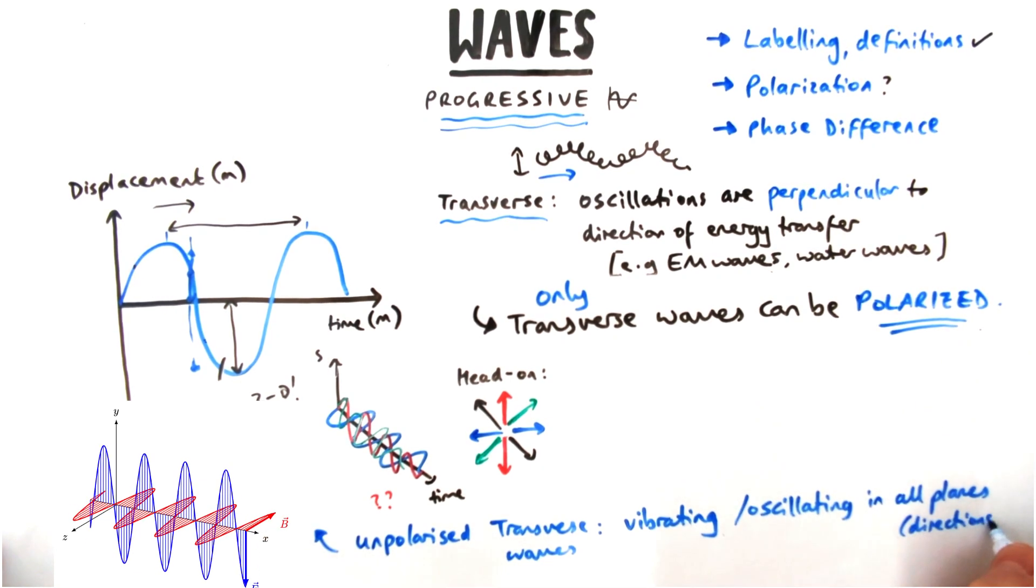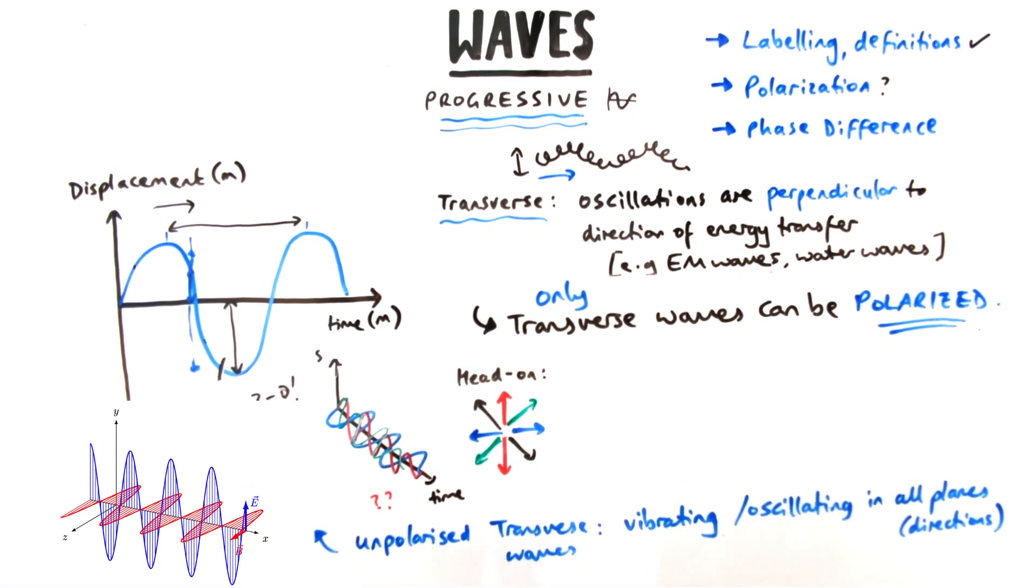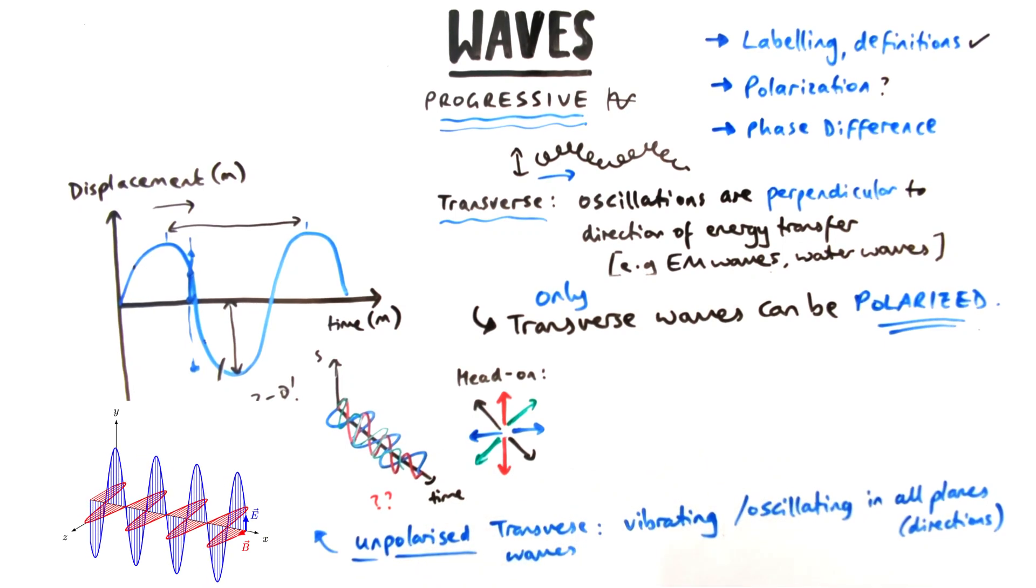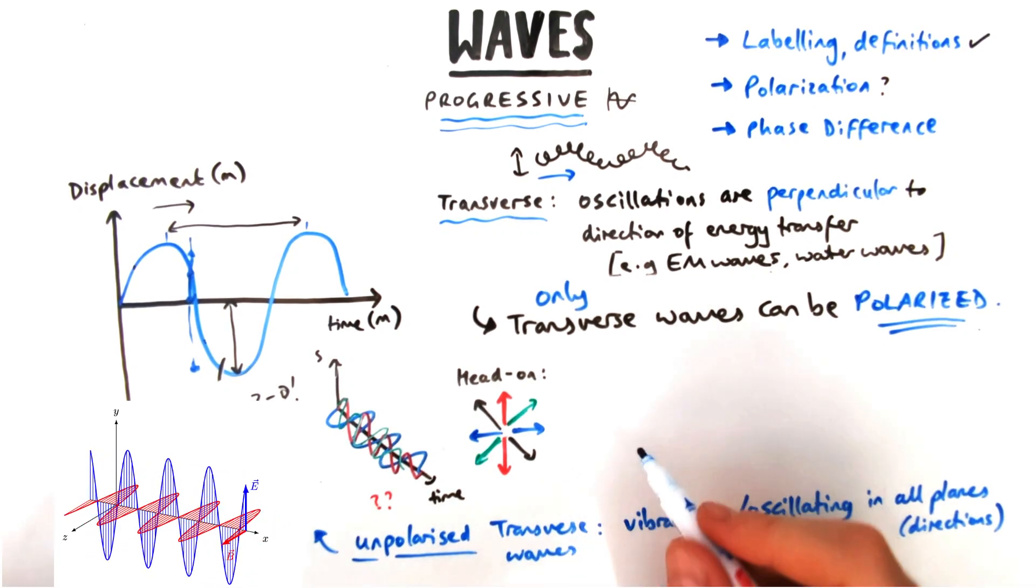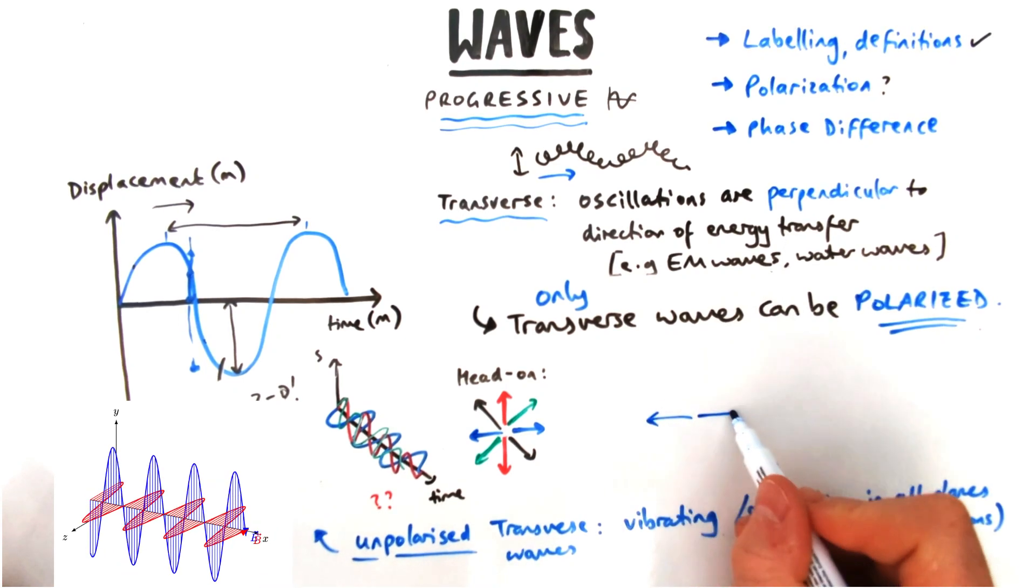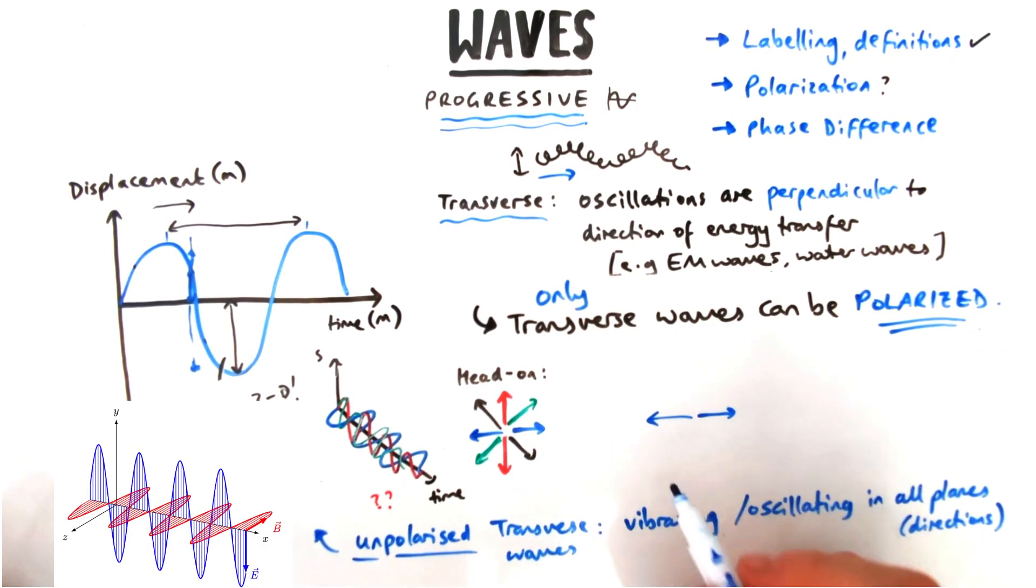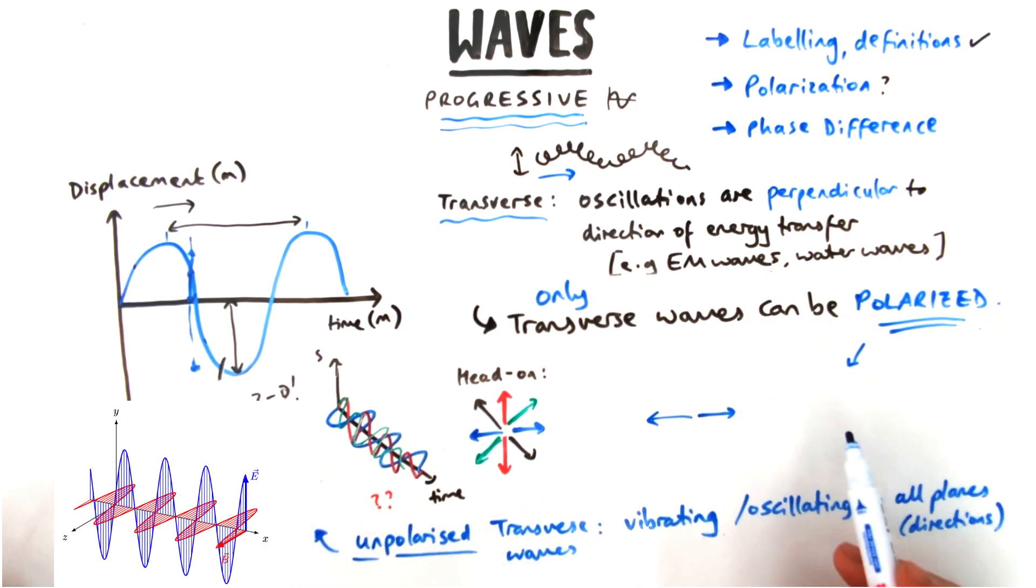Let's look at what happens when we need to polarize these waves. To polarize it means I'm going to limit the oscillations to one plane or one direction only, just like these blue ones here. The definition would be vibrations or oscillations are in one plane only.